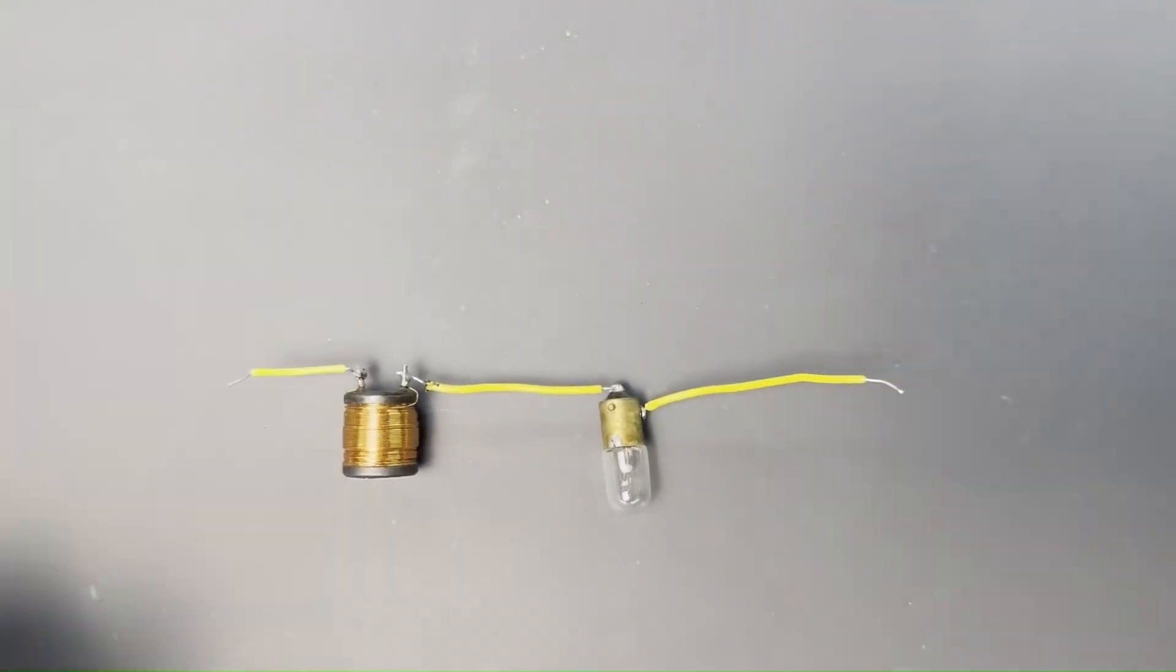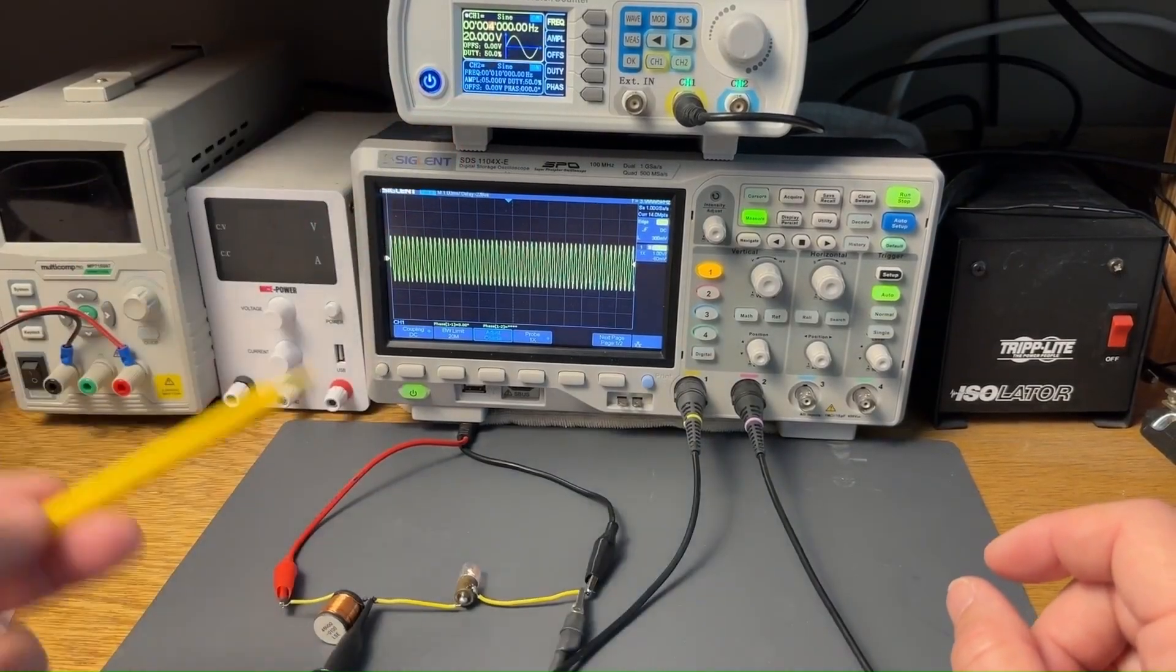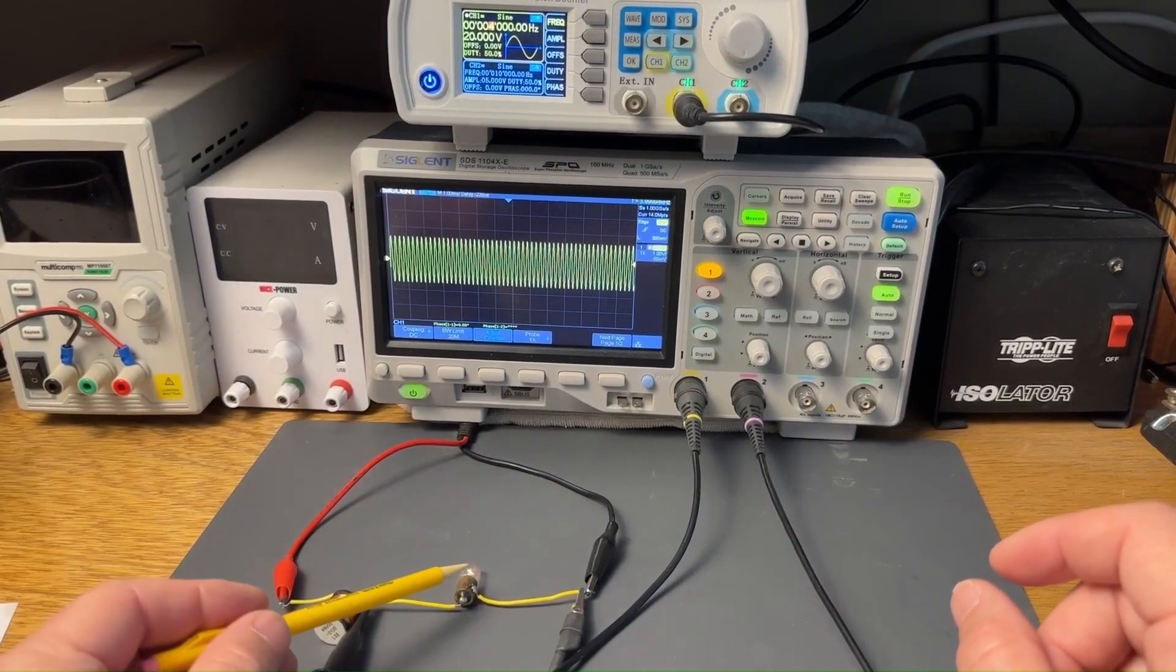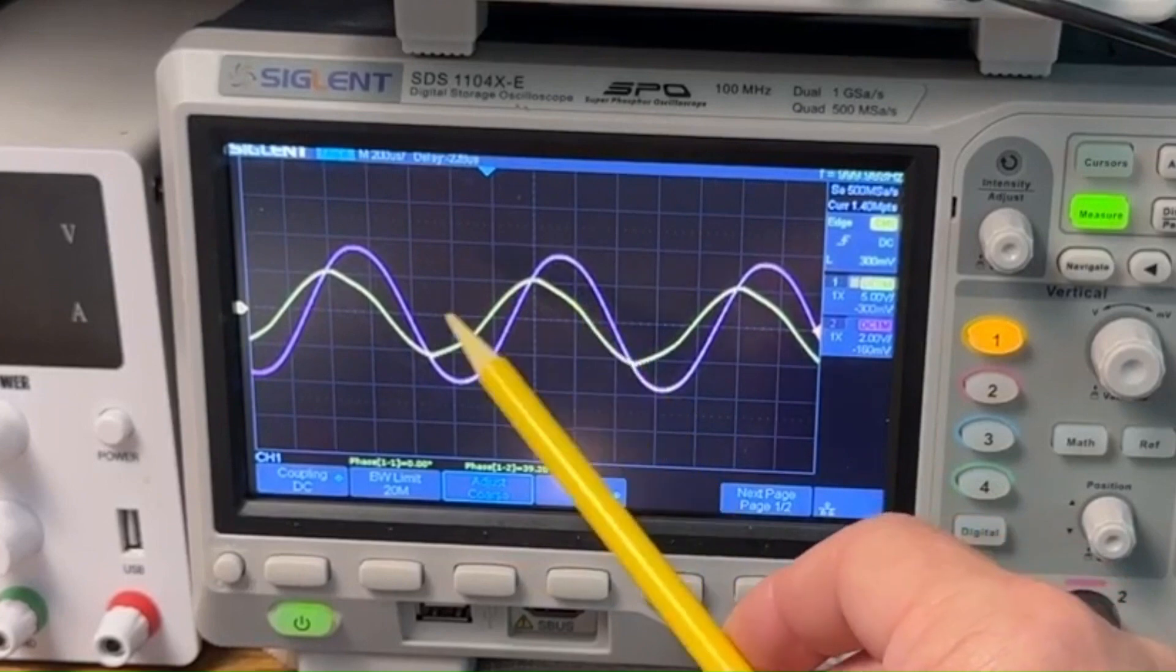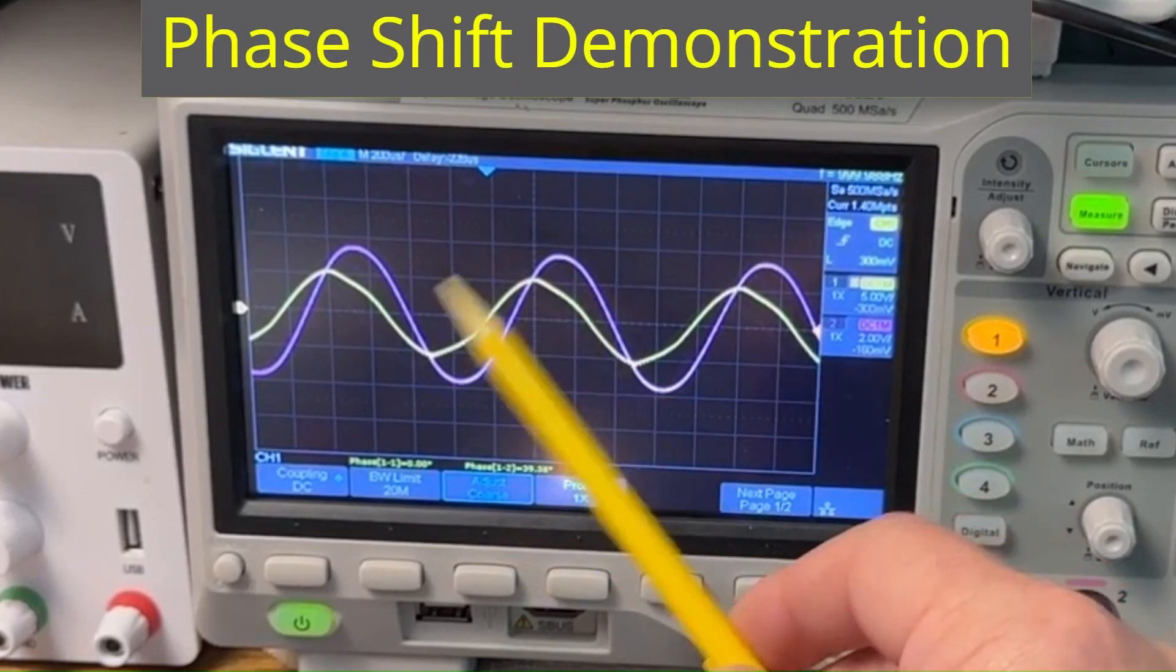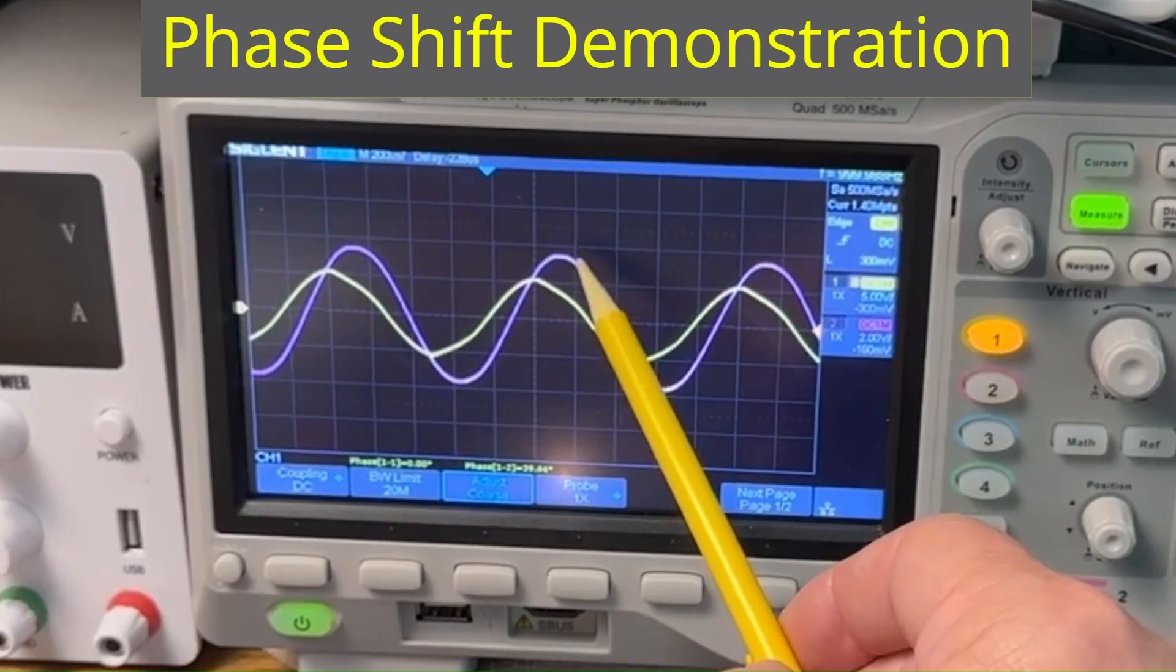I will also demonstrate inductive reactance in action using a signal generator, this inductor, and this light bulb here. Finally, I will show how inductive reactance causes a phase shift between voltage and current and will explain in great detail why this happens.